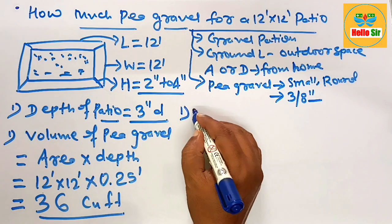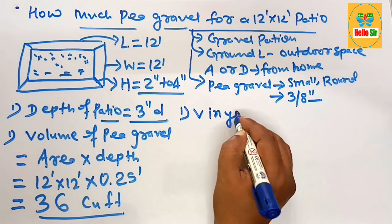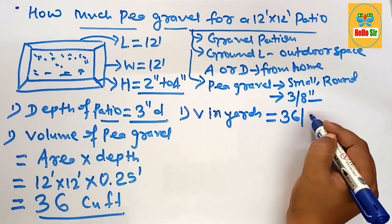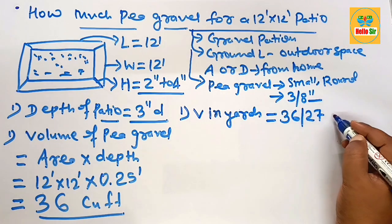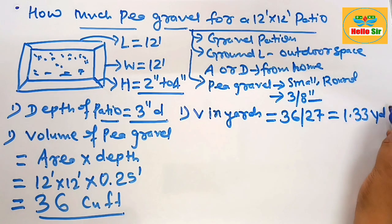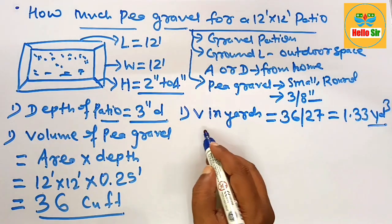Now calculate the amount, the weight in tons of gravel in yards. Volume in yards, how we calculate? The cubic foot that is 36 divide this one by 27, this will come about 1.33 cubic yards because one cubic yard is equal as 27 cubic foot.